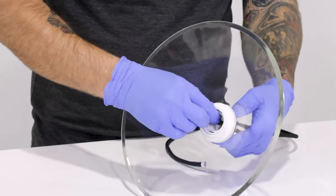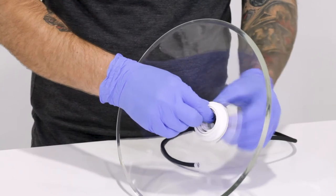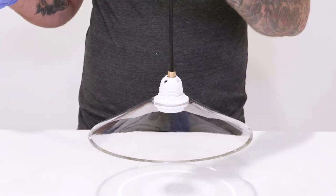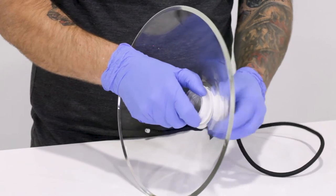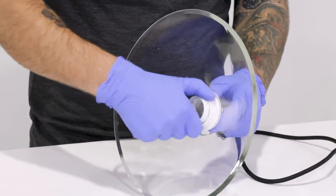Threading the rings on towards the bottom of the shade allows the socket and the bulb to sit high in the shade. And threading the rings on towards the top of the shade allows the socket and bulb to sit low in the shade.